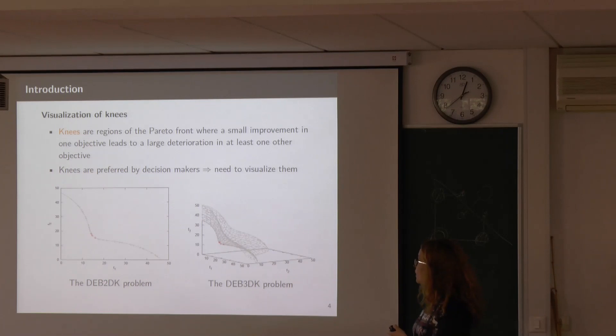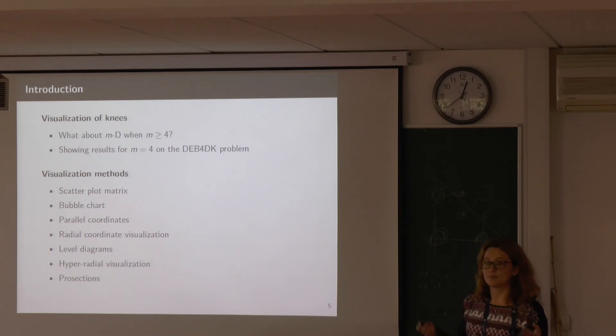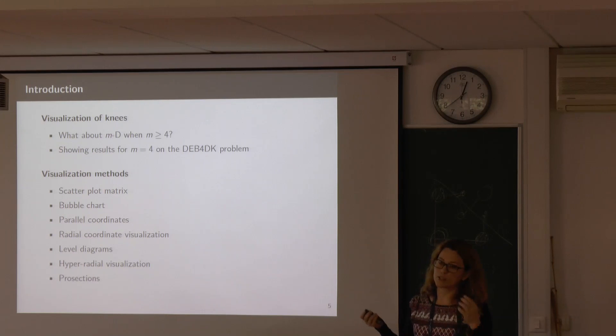Because this is something very useful, we also want to be able to visualize such knees. Here we show two examples. One is of a 2D front and one of a 3D front of the same family that I will be talking about later. The question is, 2D and 3D, everything is fine, but how to visualize knees or visualization in general is very complex when you get to four or more dimensions.